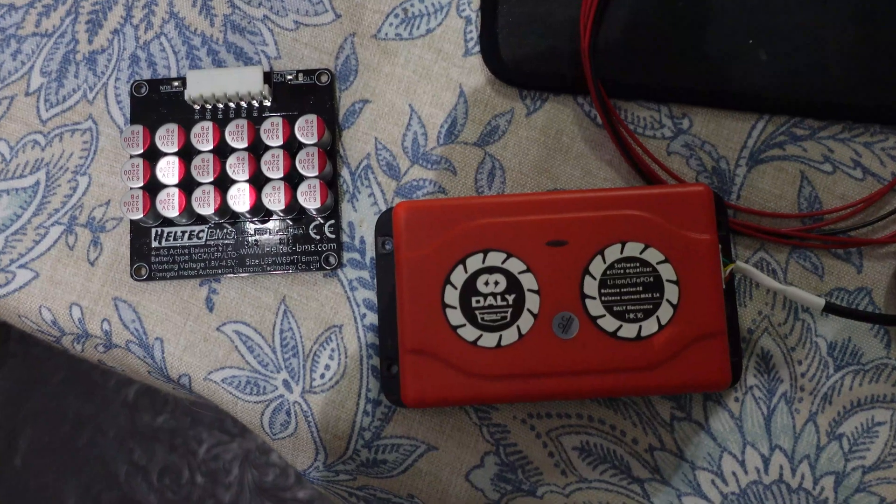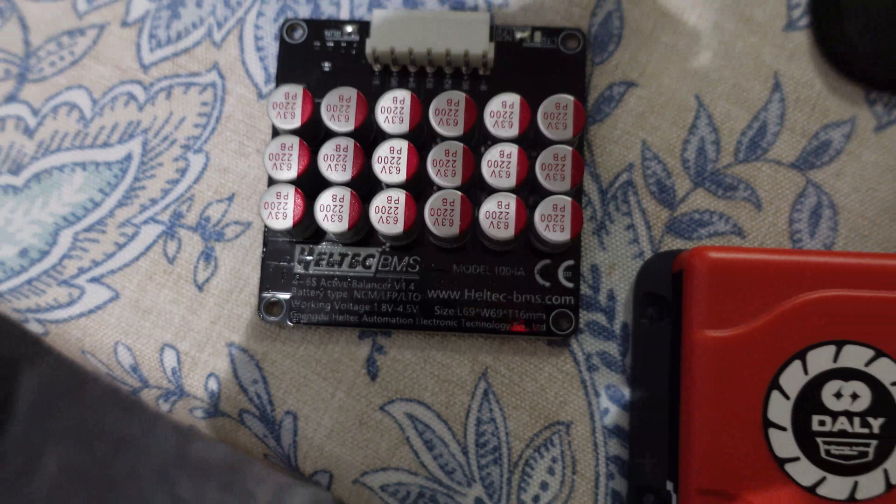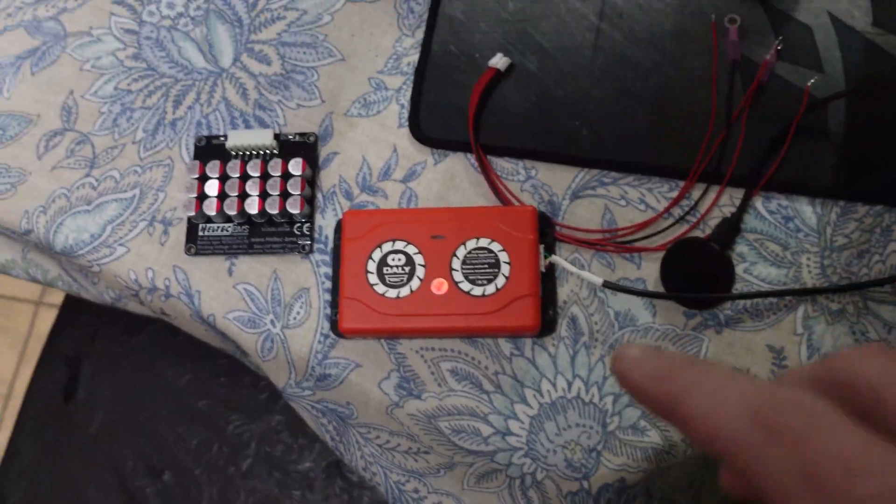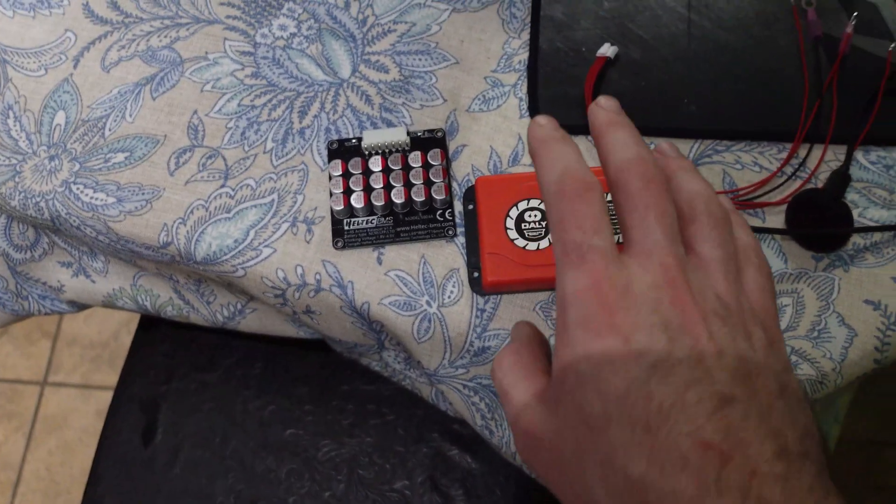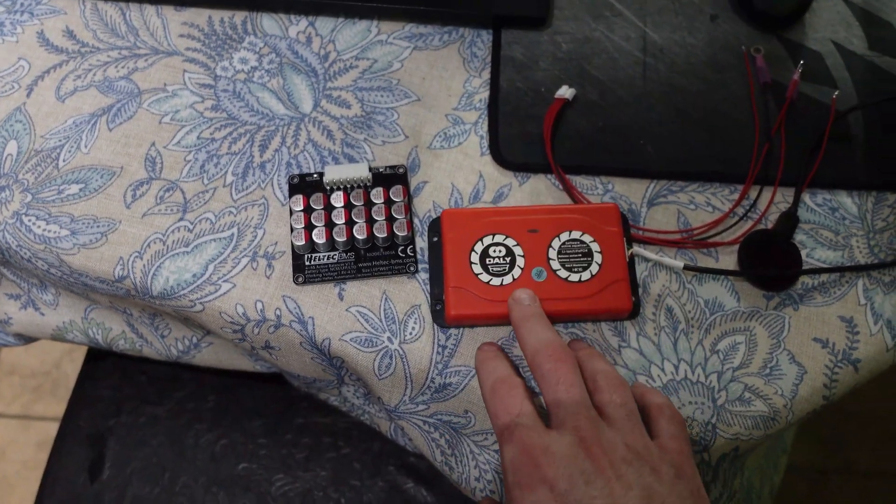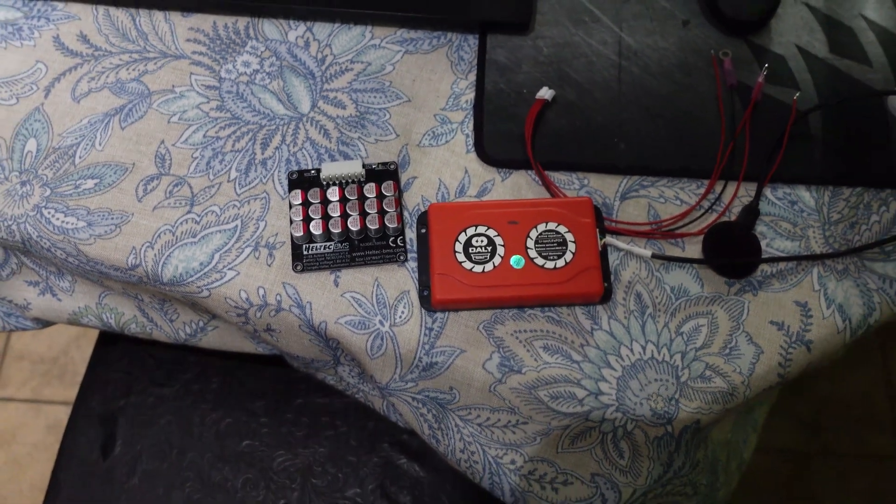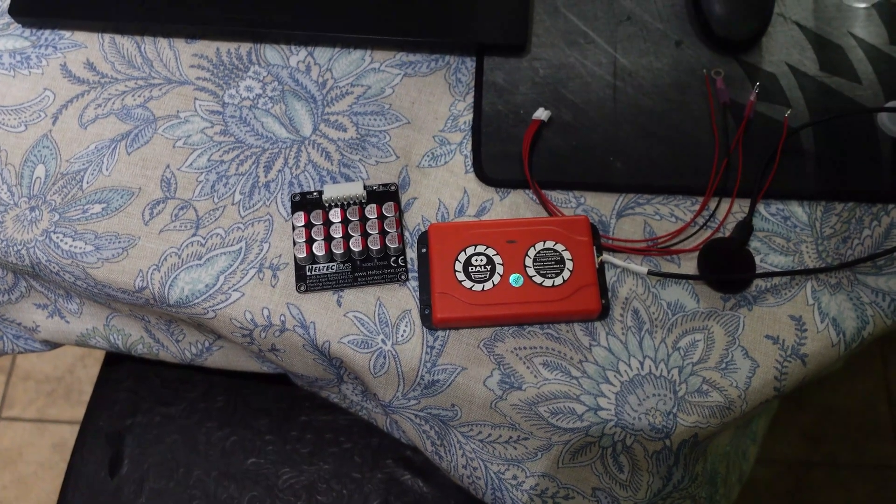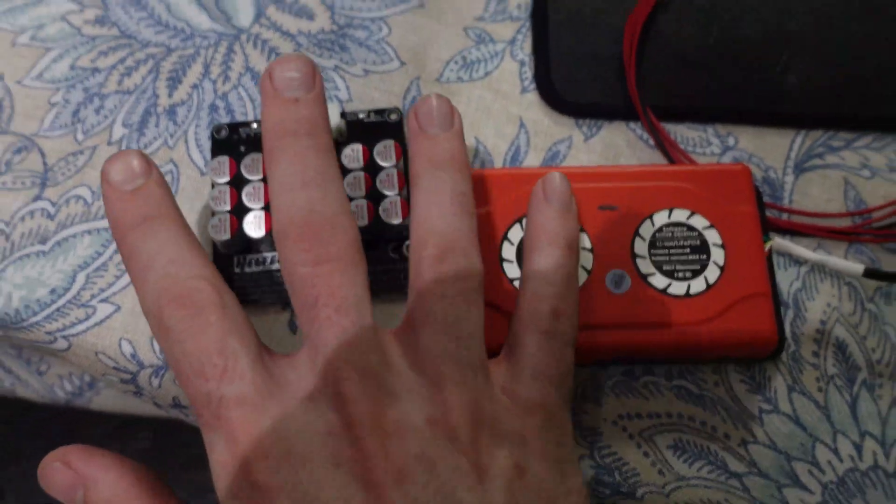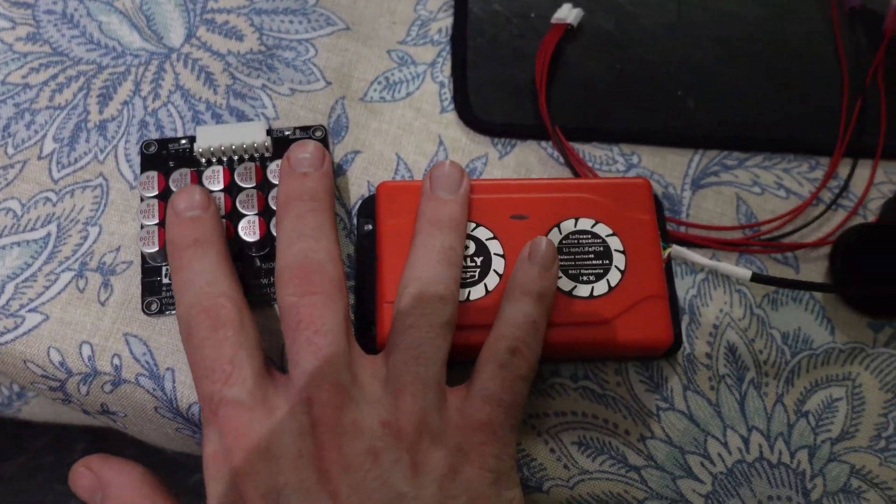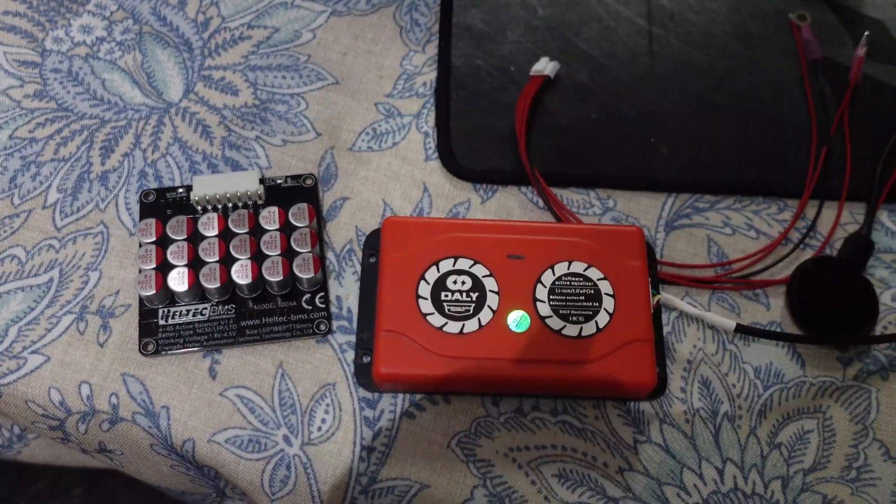Here's another active balancer, this is one of the Haltech ones, and this is the Daly one. The biggest difference between this and what's on the BMS is these are active balancers. These will actively take voltage from the highest cells and put it to the lower cells versus a passive balancer like on most BMSs. All it does is have a simple bleed circuit with a little resistor to bleed power off the most charged cells. For a while I thought this is how all the BMSs did it, but apparently not.